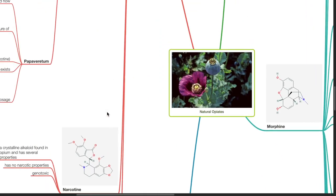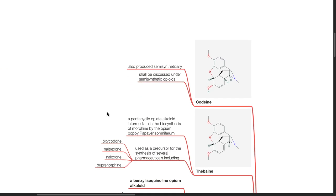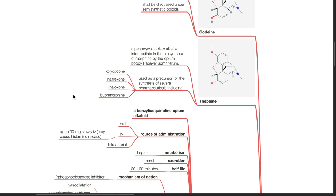Other opiates. Codeine is also produced semi-synthetically and shall be discussed under semi-synthetic opioids. Thebaine is a pentacyclic opiate alkaloid intermediate in the biosynthesis of morphine by the opium poppy papaver somniferum. It is used as a precursor for the synthesis of several drugs including oxycodone, naltrexone, naloxone and buprenorphine.